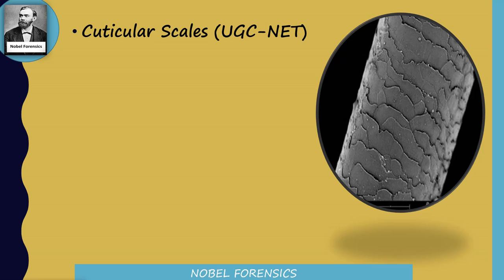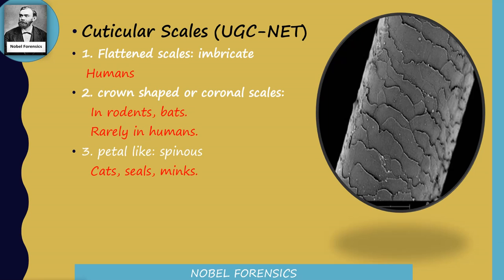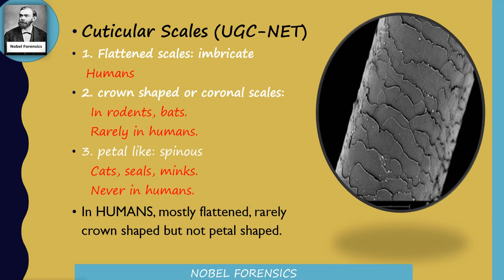There are three types of cuticular scales: flattened scales (also known as imbricate scales), crown-shaped or coronal scales, and petal-like or spinous scales. Imbricate scales are usually present in humans and very rarely in animals. Crown-shaped or coronal scales are present in rodents and bats, and very rarely in humans. Petal-like spinous scales are present in cats, seals, and minks, and are never present in humans. So focusing on humans: humans contain flattened scales, very rarely crown-shaped scales, but never petal-shaped scales. There are many previous UGC NET questions about cuticular scales.